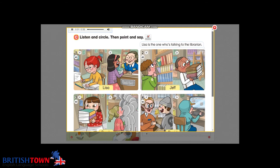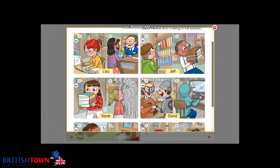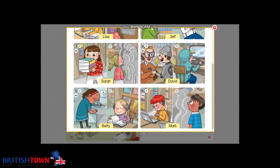Listen and circle, then point and say: Which one is Lisa? She's the one who's talking to the librarian. Which one is Jeff? He's the one who's looking for a book. Which one is Sarah? She's the one who's carrying the books. Which one is David? He's the one who's using the computer. Which one is Betty? She's the one who's wearing headphones. Which one is Mark? He's the one who's waiting in line.